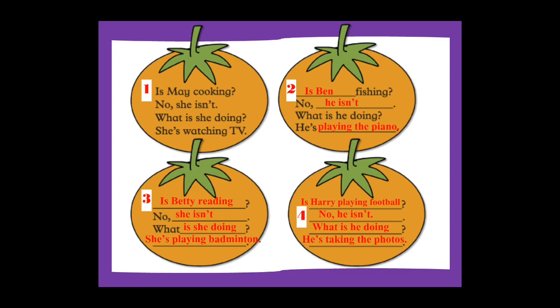Number three: is Betty reading? No, she is not. What is she doing? She is playing badminton. Number four: is Harry playing football? No, he is not. What is he doing? He is taking photos.